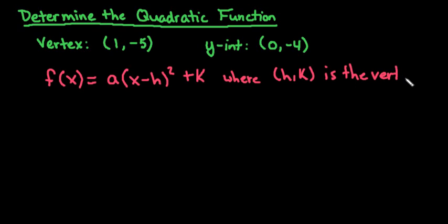So what we are going to do is use this equation in order to solve for a. We're going to plug in our values that we are given here. This will go in for h and k, and our y-intercept will go in for our x and our f of x, because this is a point that our graph passes through.